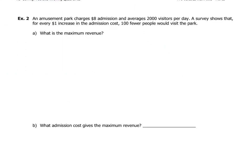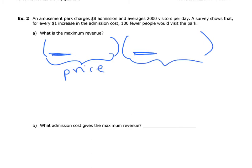This next question is very similar. Hit pause and try it on your own. Set up the quadratic using two brackets — one for the price and one for how many you're going to sell.